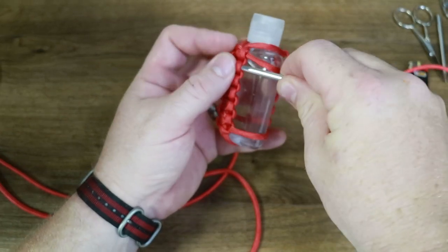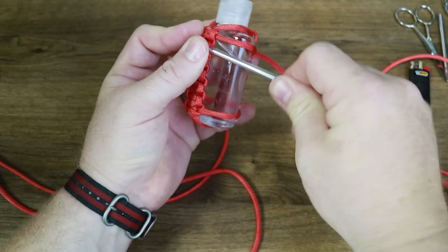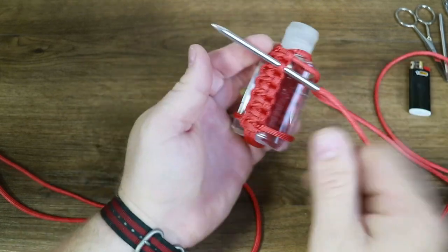Next, do the same thing back through the next knot on the other side of the bottle thusly. Pull it snugly.